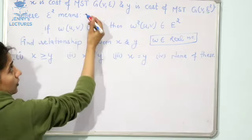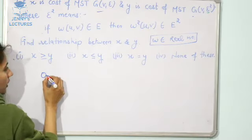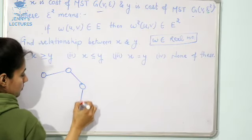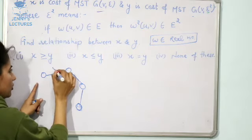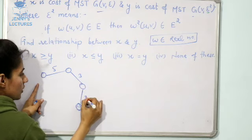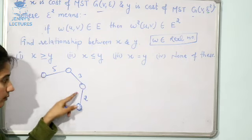Let us take one example. We have two MSTs, one is this one and one is this one. Let us take one MST, suppose this one. And suppose this edge is 5, this one is 3, this one is 2. The weight of these edges are these.